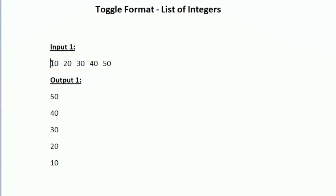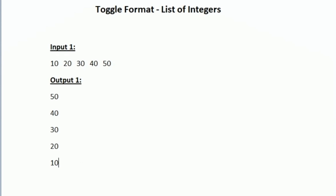The input list is 10, 20, 30, 40, 50. After reversing it will become 50, 40, 30, 20, and 10. Because the input is given horizontally, we should print our output vertically — printing 50, 40, and so on, each on a new line.